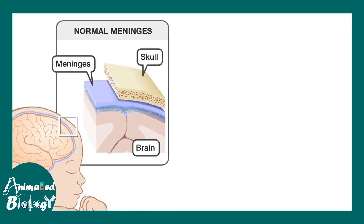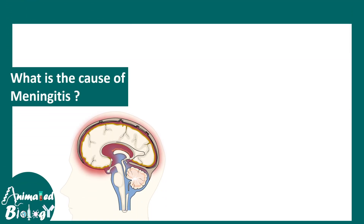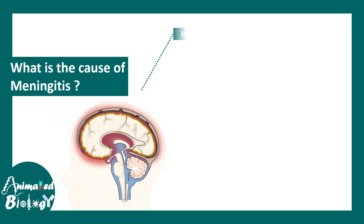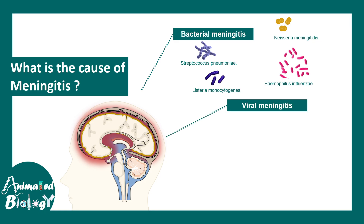Meningitis can be caused due to many reasons. This is how a normal and infected meninges look like. The reason for meningitis could be bacterial — bacteria like Streptococcus pneumoniae, Neisseria meningitidis, Listeria monocytogenes, and Haemophilus influenzae can possibly lead to bacterial meningitis.